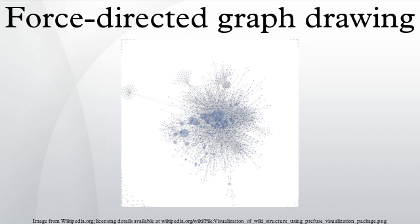Force-directed graph drawing algorithms are a class of algorithms for drawing graphs in an aesthetically pleasing way. Their purpose is to position the nodes of a graph in two-dimensional or three-dimensional space so that all the edges are of more or less equal length and there are as few crossing edges as possible.